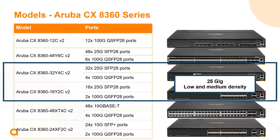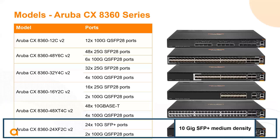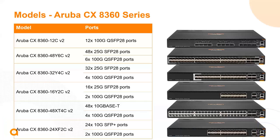We have the 8360-32Y4C and the 16Y2C — the 32-port 25 gig model with 400 gig uplinks, and the smaller 16-port model with 200 gig uplinks. We also have a copper BaseT model with 48 ports of 10 gig BaseT plus four ports of 100 gig QSFP28, and finally a small SFP+ model that supports up to 24 ports of SFP connectivity as well as two ports of 100 gig connectivity.